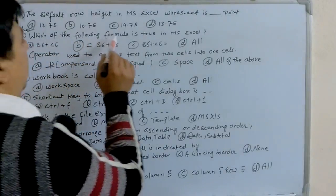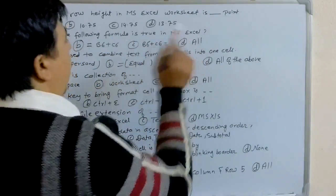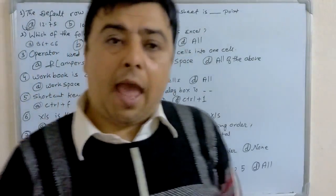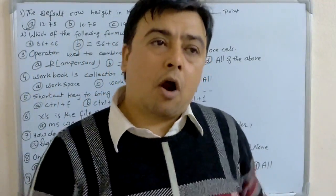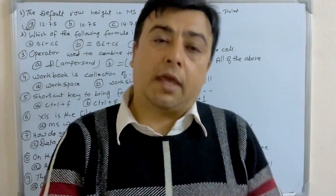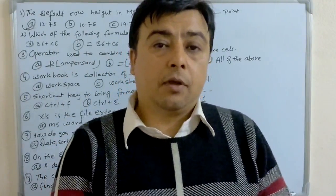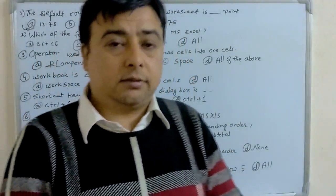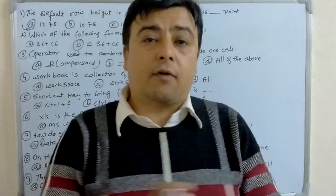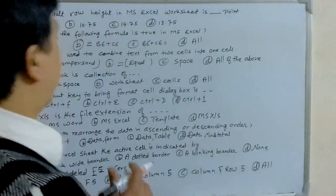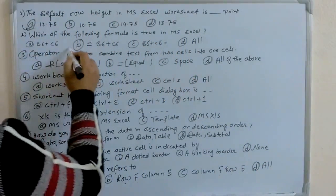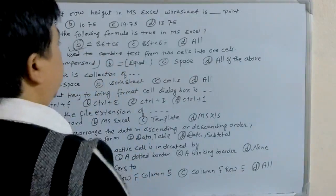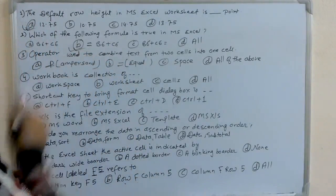The next question: which of the following formulas is correct in MS Excel? We know that in MS Excel, a formula always begins with an equal sign. Without using the equal sign, we cannot write any formula. To begin the formula, the equal sign is essential. So the answer is B, which is =B6+C6.